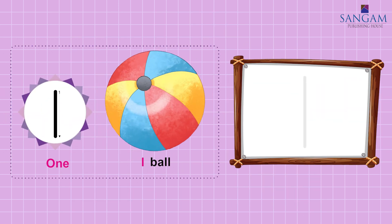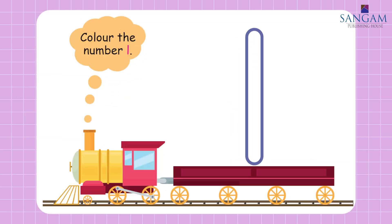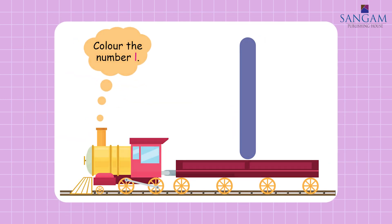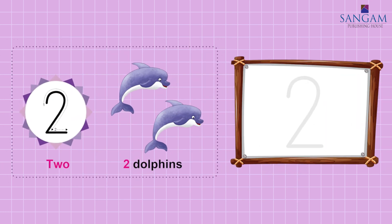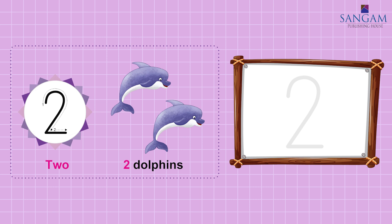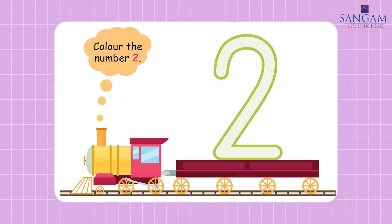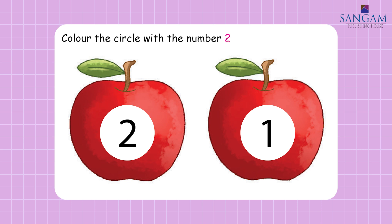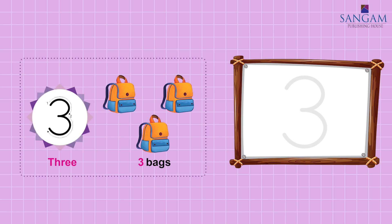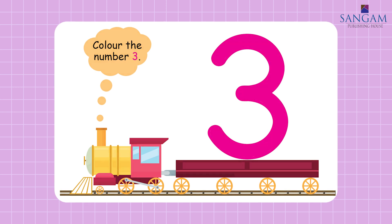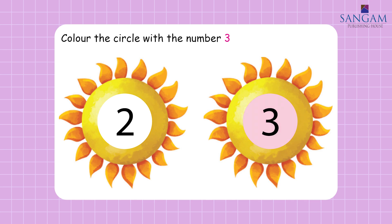One. One ball. Trace the number one in the box. Colour the number one. Colour the circle with number one. Two. Two dolphins. Trace the number two in the boxes. Colour the number two. Colour the circle with number two. Three. Three bags. Trace the number three in the boxes. Colour the number three. Colour the circle with number three.